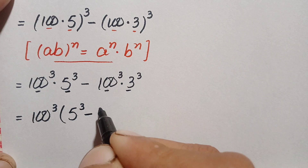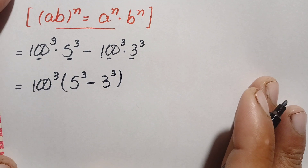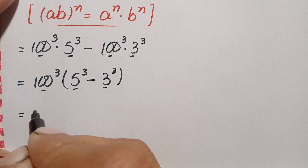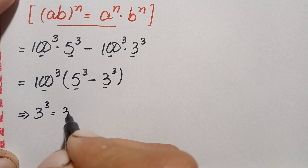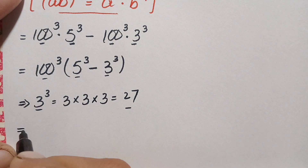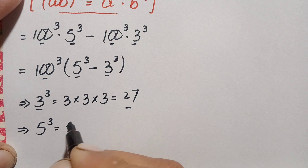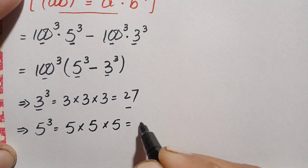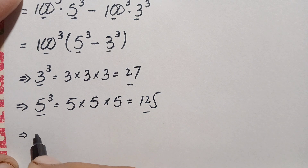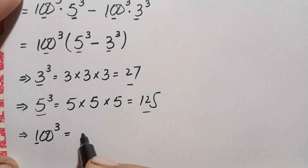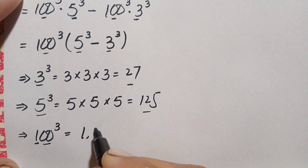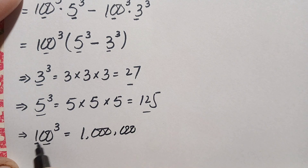We will substitute the values of 3 cubed, 5 cubed, and 100 cubed. The value of 3 cubed is 3×3×3 = 27. The value of 5 cubed is 5×5×5 = 125. For 100 cubed: 1 cubed is 1, and there are two zeros which are cubed, giving six zeros, so 100 cubed equals 1,000,000.